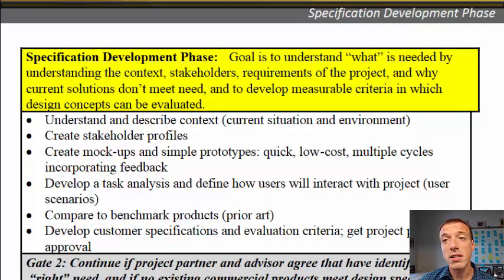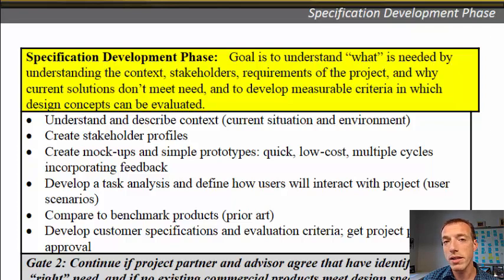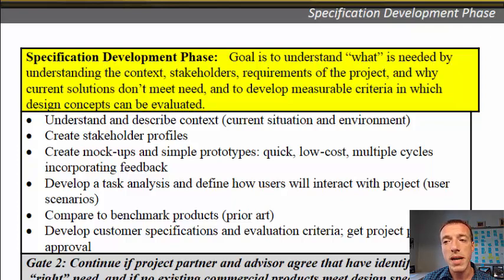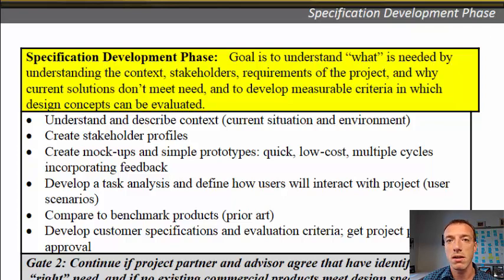The next phase is specification development. The goal here is to understand exactly what is needed in quantitative terms by all of the stakeholders. In the user needs phase you identified what they need broadly in a qualitative way; in the specification phase you want to get more quantitative. You may try to understand the context of the project: what's the use environment — will it be used outside or inside, by children or adults? There are many different factors to understand. Tools you might use include creating stakeholder profiles, doing task analysis where you build scenarios to think about how the product might actually be used, and doing mock-ups and prototypes to get things in people's hands to better understand what they need.